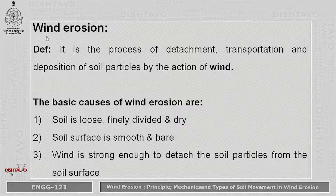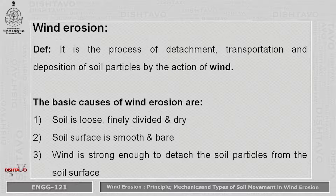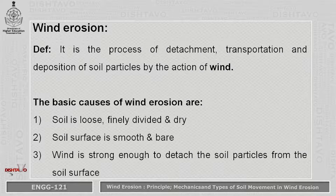Starting with the definition of wind erosion — it is the process of detachment, transportation and deposition of soil particles by the action of wind. Here, water is not considered, only wind is considered. The basic causes of wind erosion are: first, the soil is loose, fine, or completely dry; second, the soil surface is smooth and bare; third, the wind is strong enough to detach the soil particles from the soil surface.